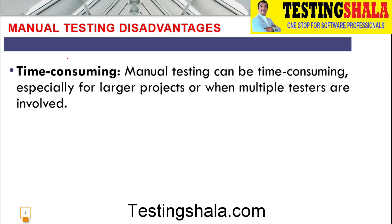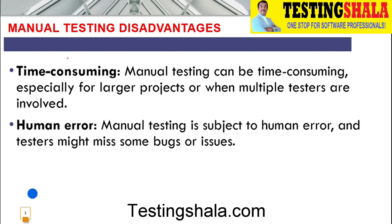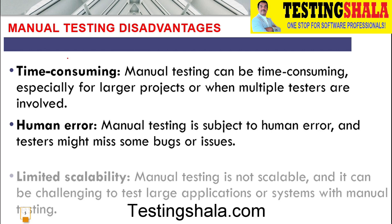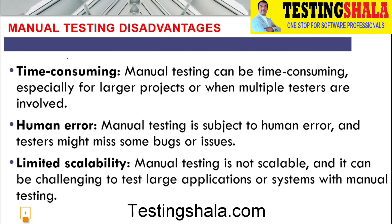Next we will understand the disadvantages of manual testing. It is a little time-consuming compared to automation testing, because we have to execute the same things again and again, especially for larger projects where multiple testers are involved. Human errors can also happen, because of which some bugs or issues may be ignored, missed, or forgotten.